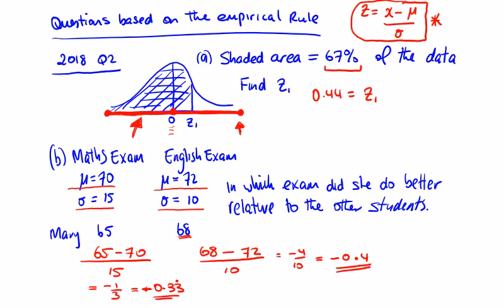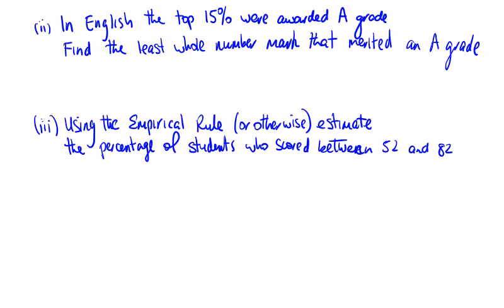Now interestingly, let's have a look along the line here. If this point here is minus 0.33, and let's just move away from the arrow, I know they're going to be pretty close to each other, but that point is minus 0.4. Can you see that she's done better in maths than she has in English? Okay, so in English, the top 15 percent we're awarding an A grade.